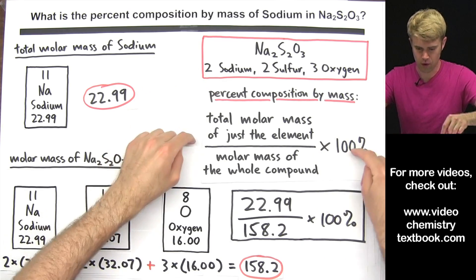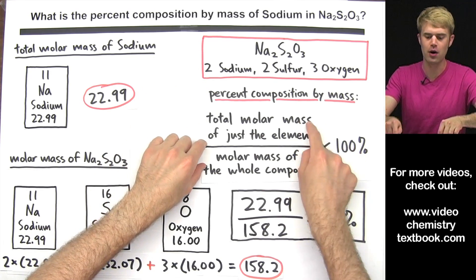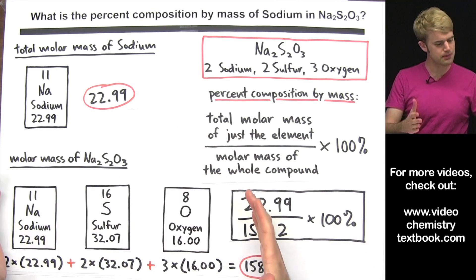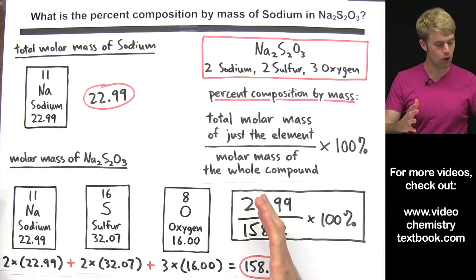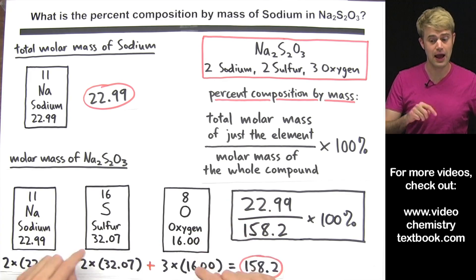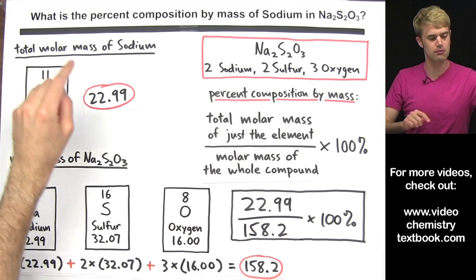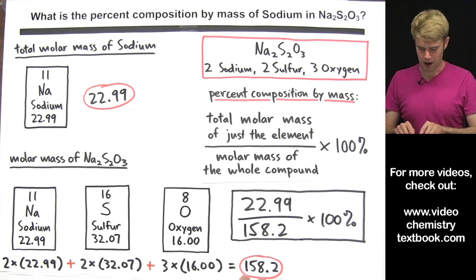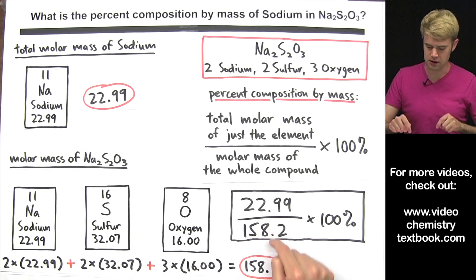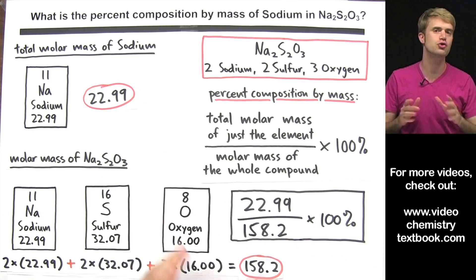So here's my formula for percent composition by mass. I want to get a number for the top of the fraction and a bottom of the fraction. Here's my calculation for the molar mass of the compound where I'm adding up the molar masses of the different elements that make it up, and then up here I have a molar mass of sodium. I put this on the bottom of the fraction, I put this on the top of the fraction, I divide and I multiply by 100%.